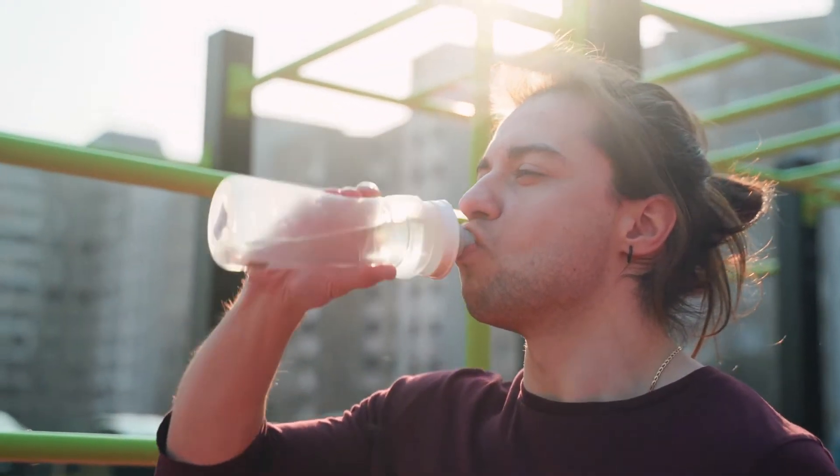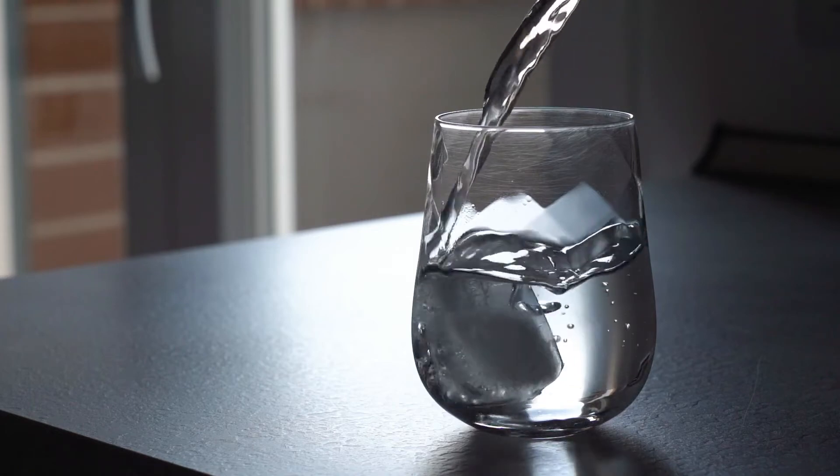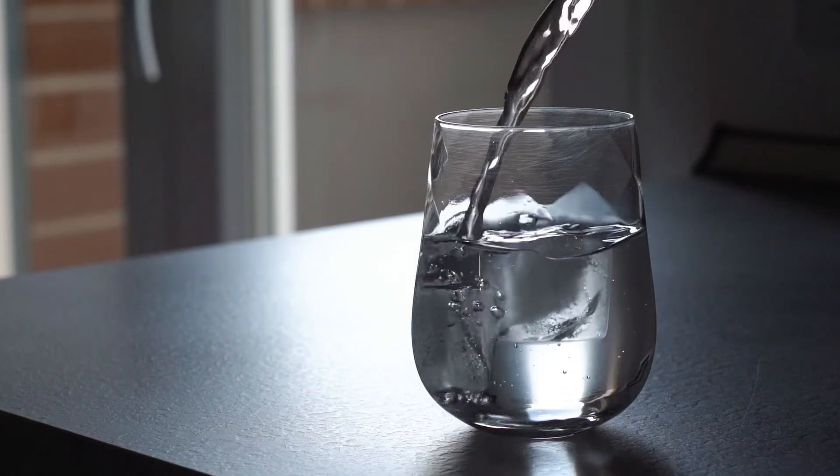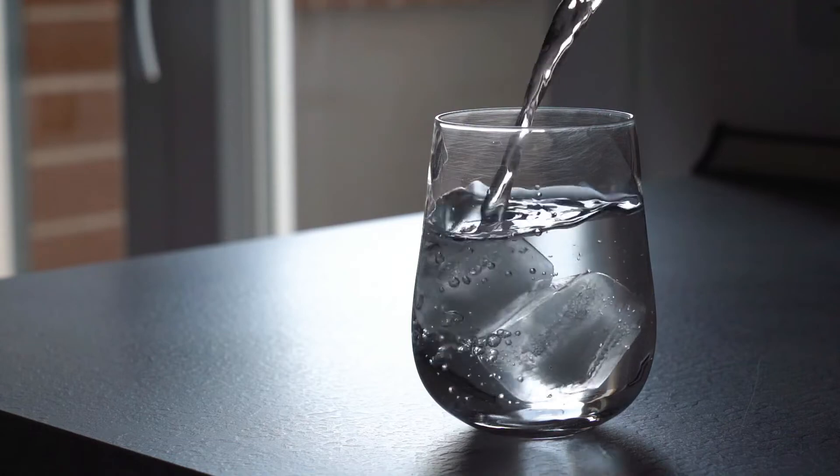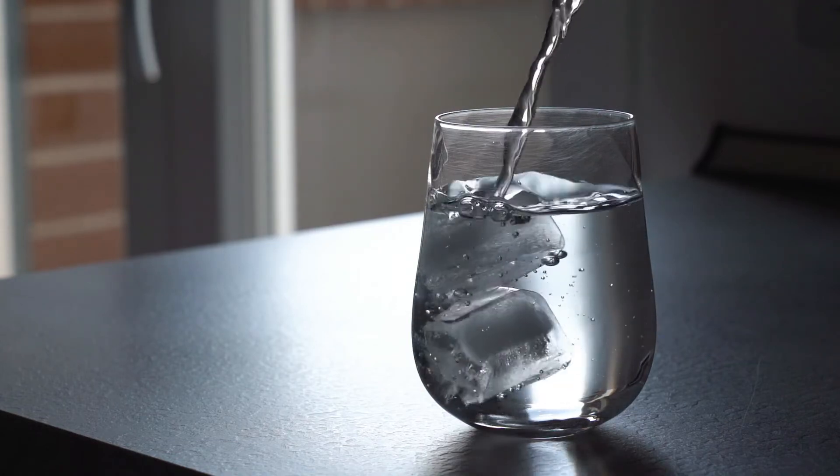7. Distilled water. Distilled water is produced by boiling water and then condensing the steam back into water. It is typically free of minerals and impurities. Distilled water is often used in specific applications like laboratory work and steam irons.